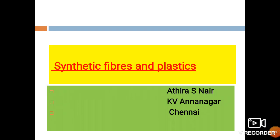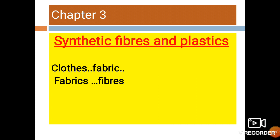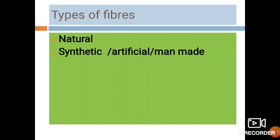Today we are going to start Chapter 3: Synthetic Fibers and Plastics. The clothes we wear are made of fabrics, and fabrics are made from fibers. There are mainly two types of fibers: natural fibers and synthetic fibers. Natural fibers are obtained from plants and animals — for example, plant fibers include jute and cotton, while animal fibers include wool and silk.